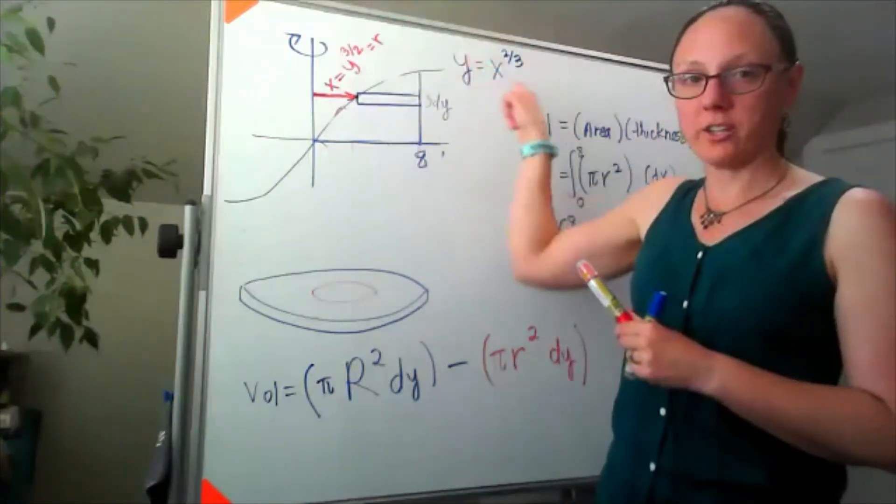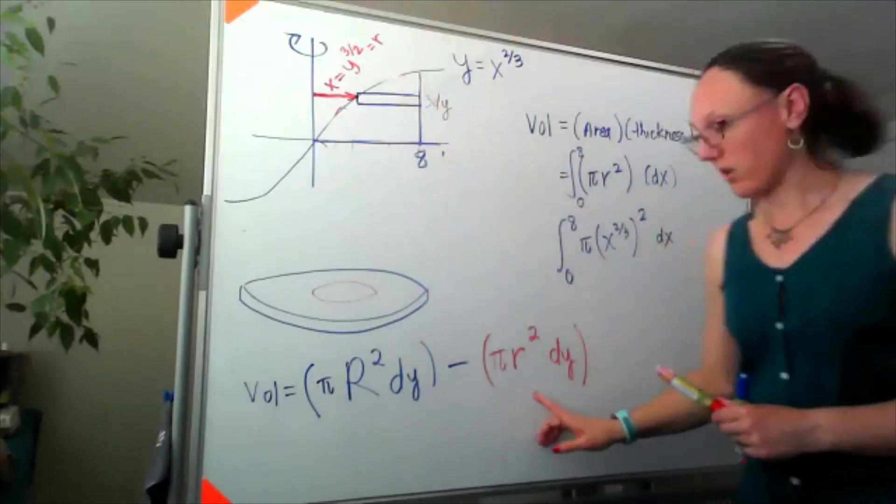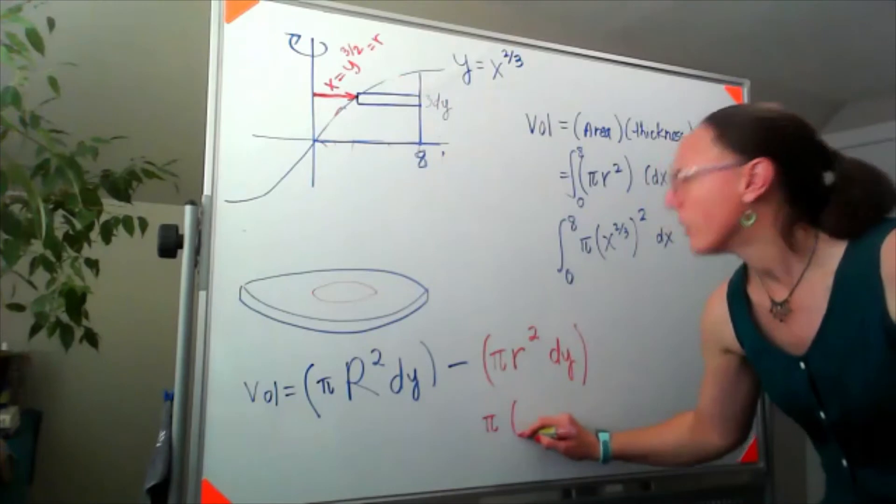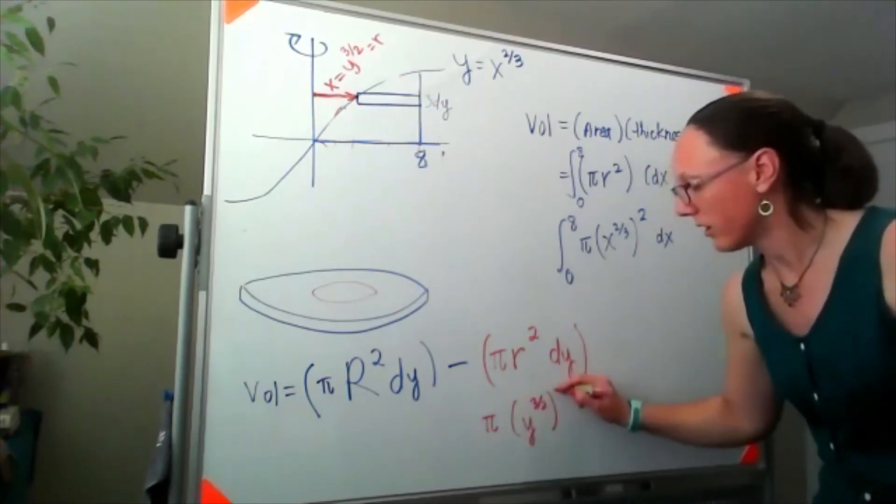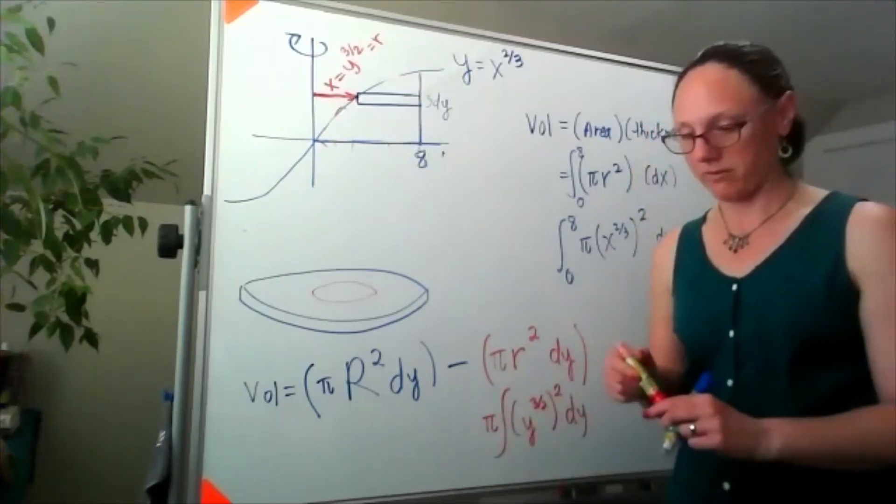This small radius is actually x equals y to the three halves power from rearranging this equation to say x equals. So our smaller radius down here would be y to the three halves power squared.